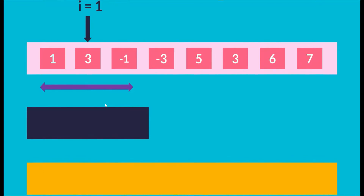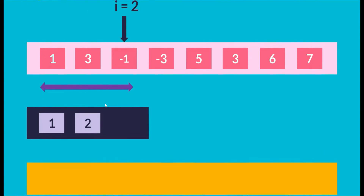We push index 1 onto the DQ and move to index 2, which holds -1. Since -1 is not greater than 3, we just push index 2 onto the DQ. At this point we've looked at all elements in our first sliding window. The maximum is at the front of the DQ — index 1, element 3 — so we push 3 onto the output array.